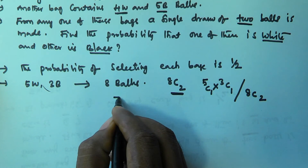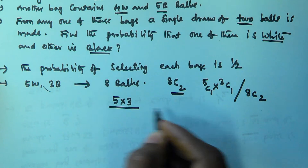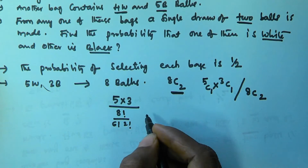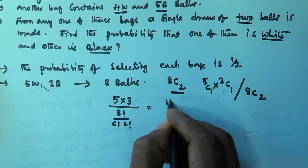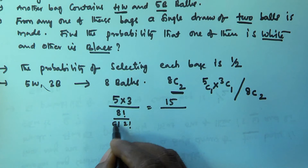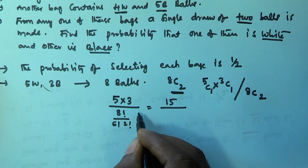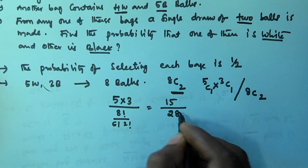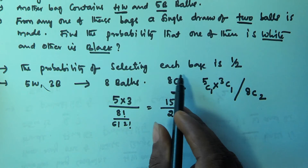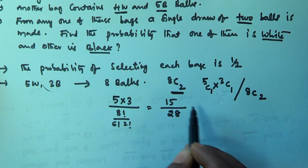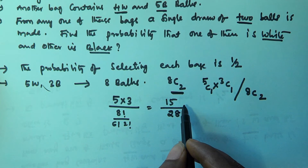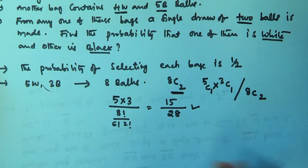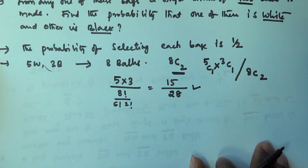So 5C1 is 5 and 3C1 is 3. And 8C2 is 8! divided by 6! × 2!, which gives us 28. So the probability of selecting 2 balls where 1 is white and 1 is black from the first bag is 15/28.